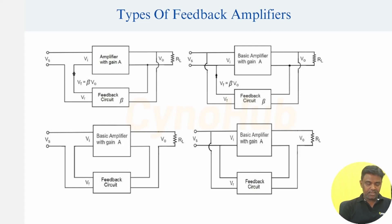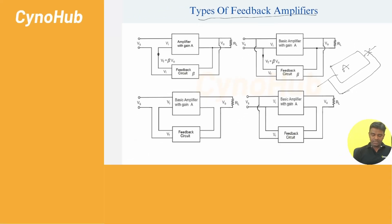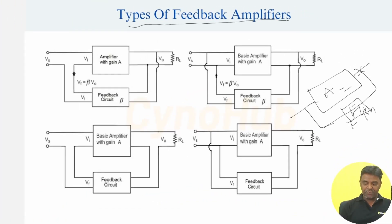So what is meant by feedback? Within the amplifier, to improve the stability, a sample of output is again applied to the input. That mechanism is called feedback. This sample of output is applied by using the feedback network. The amplifier which uses feedback is called a feedback amplifier.